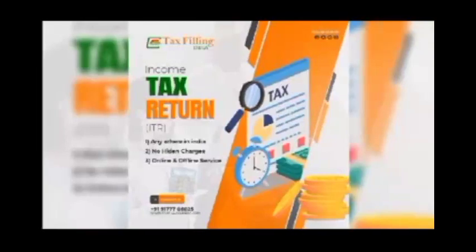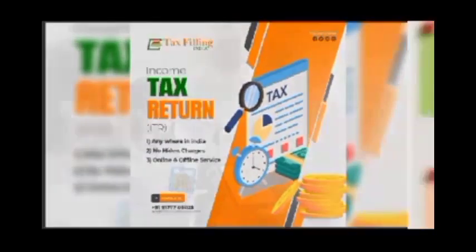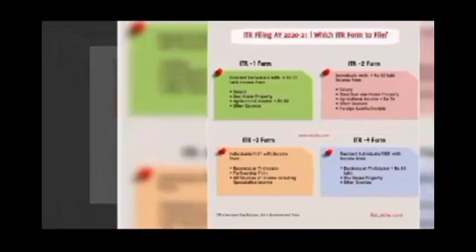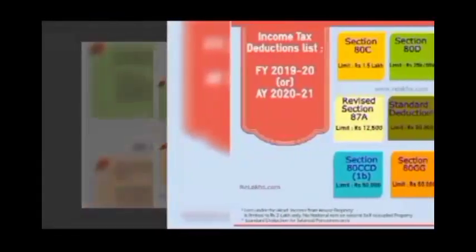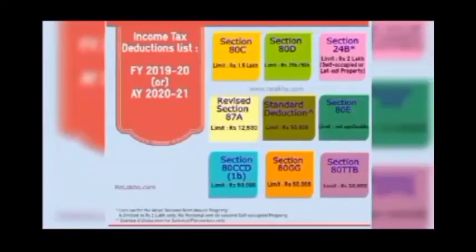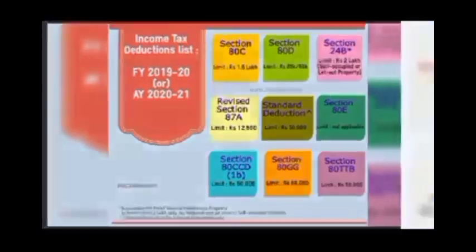Here are a few important sections to reduce tax. Section 80C provides tax deduction on investments. Section 80D is used to deduct tax on premiums paid on medical insurance for self, spouse, parents, and children. Section 80G allows tax deductions by donating to charitable trusts. There are many more sections like 80GG and 80DD to reduce tax.